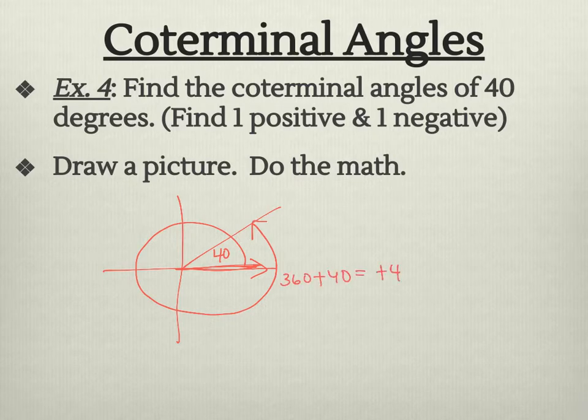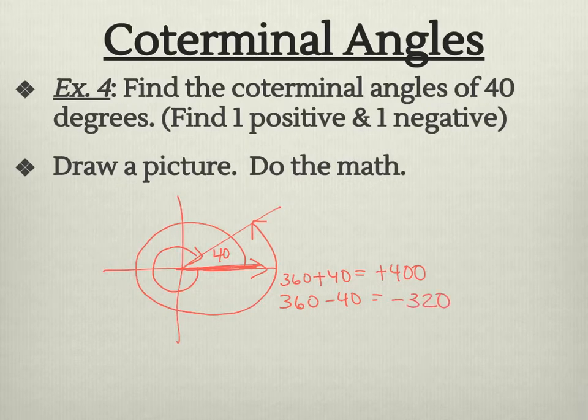And so that's going to be 360 plus 40. So we could say a positive 400. You don't need the positive, but that would be my positive one. Then if I want to do negative, I'm going to still start at my x-axis. I'm going to go in the clockwise direction. And that would go around. So I'd be doing 360 minus 40. And we're talking about a negative 320 degrees to give the negative for the direction.